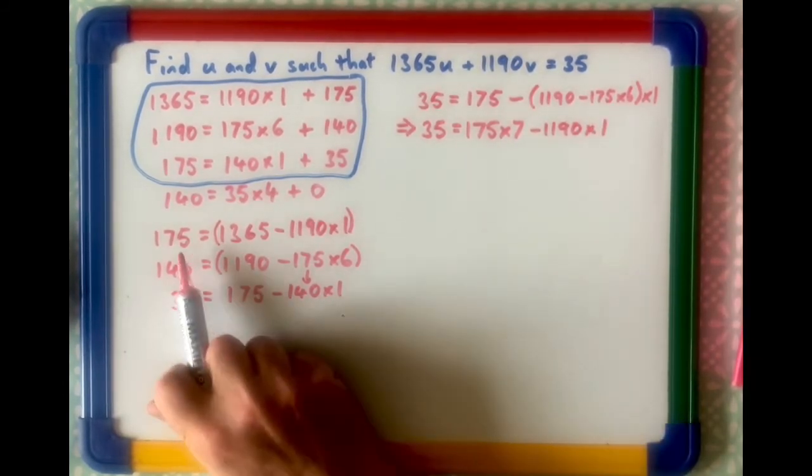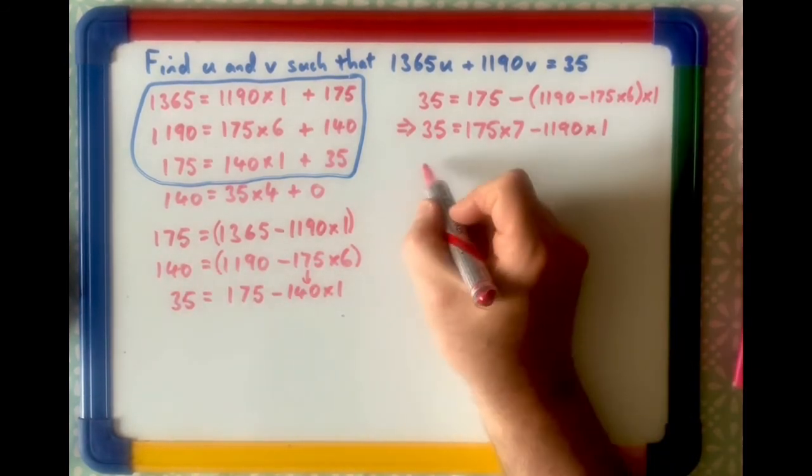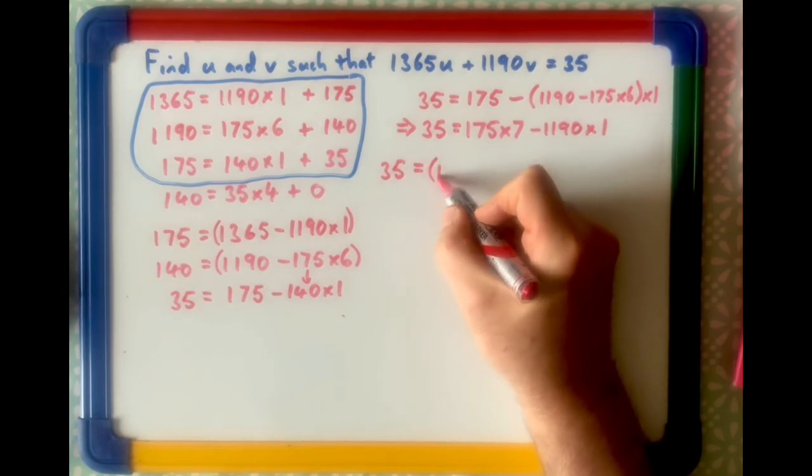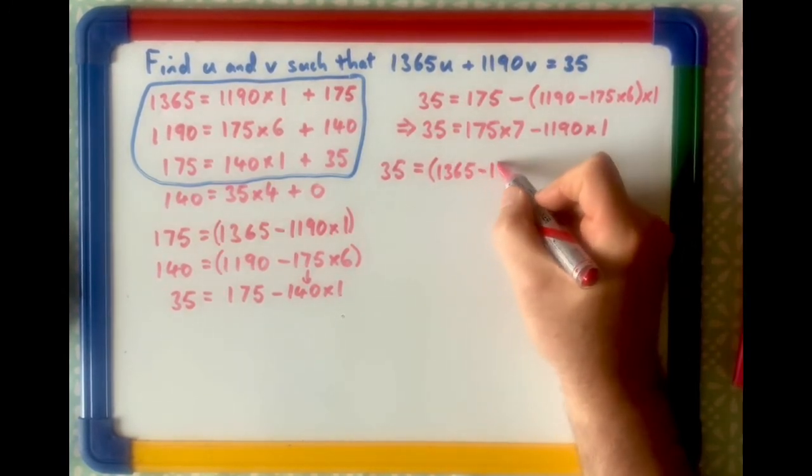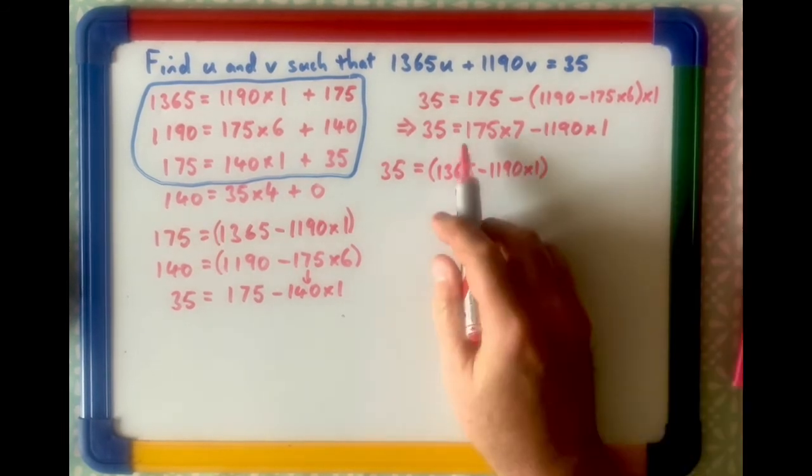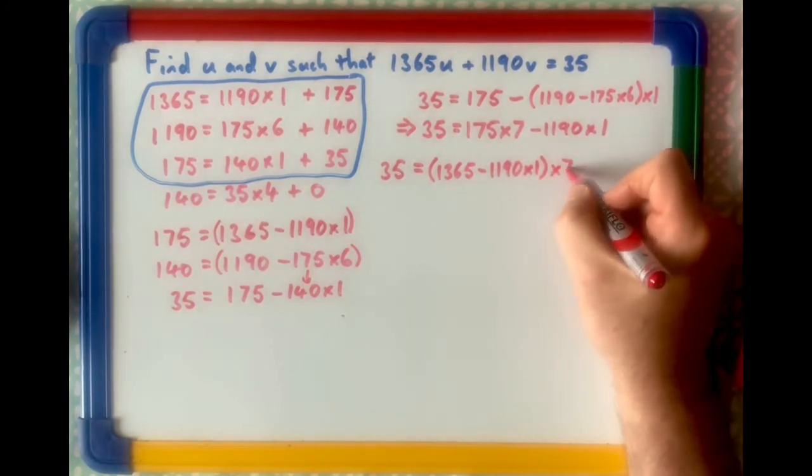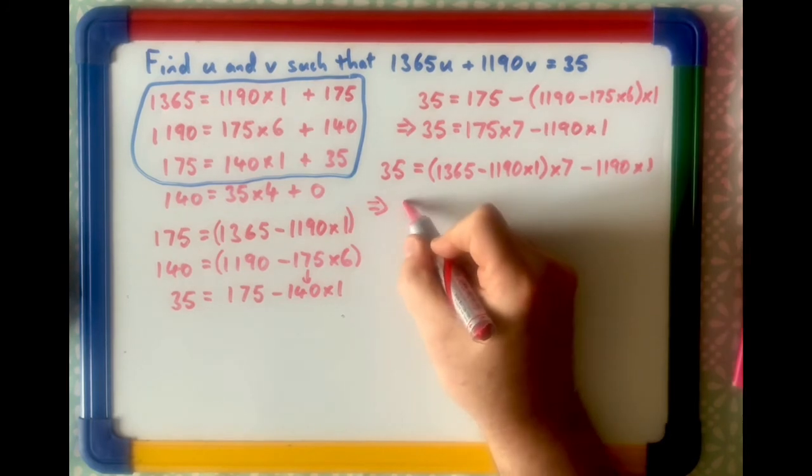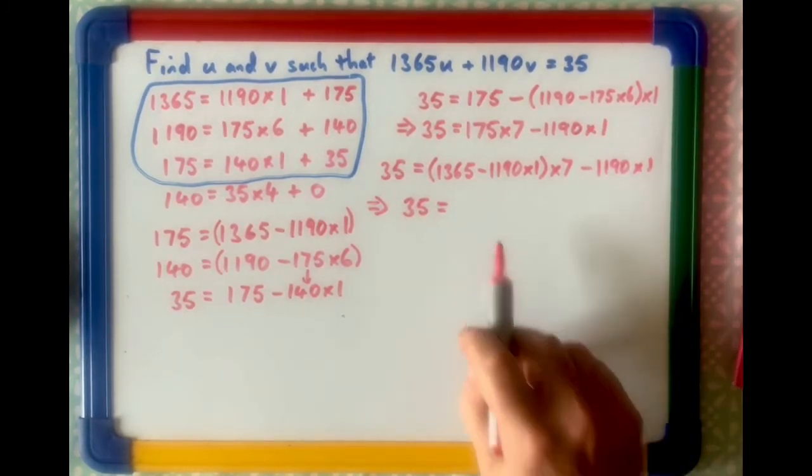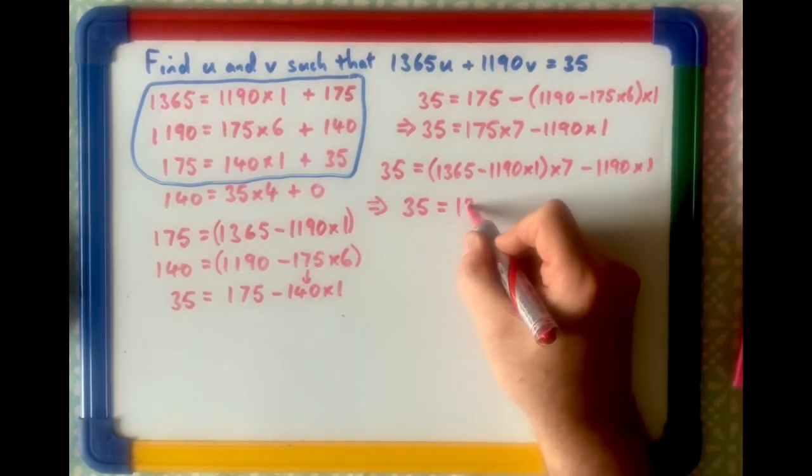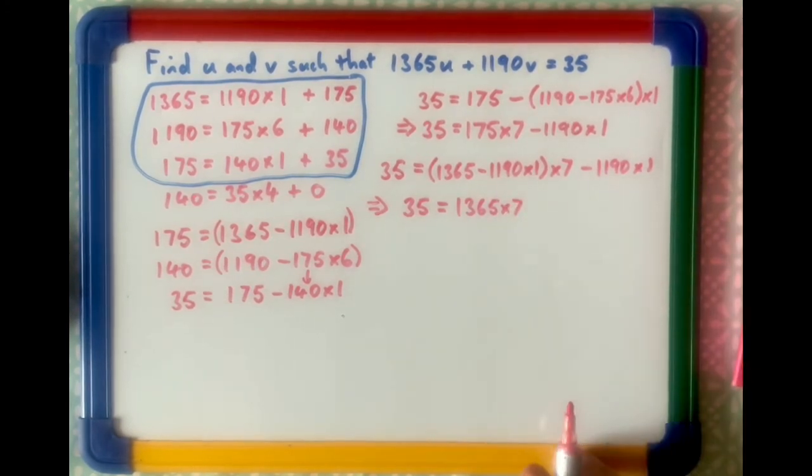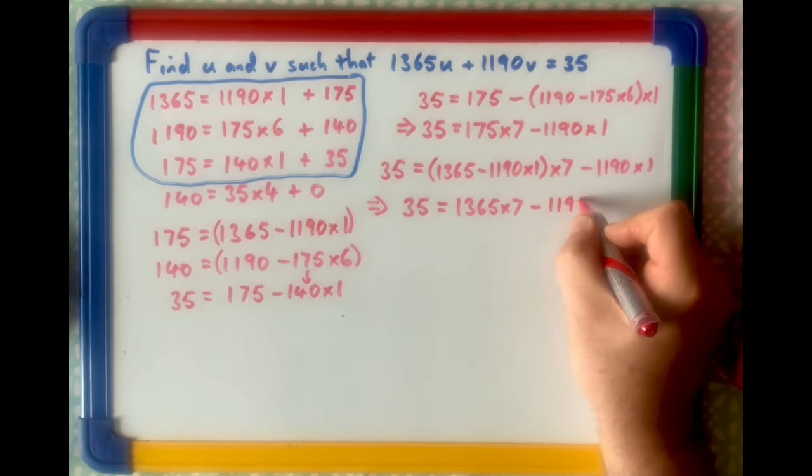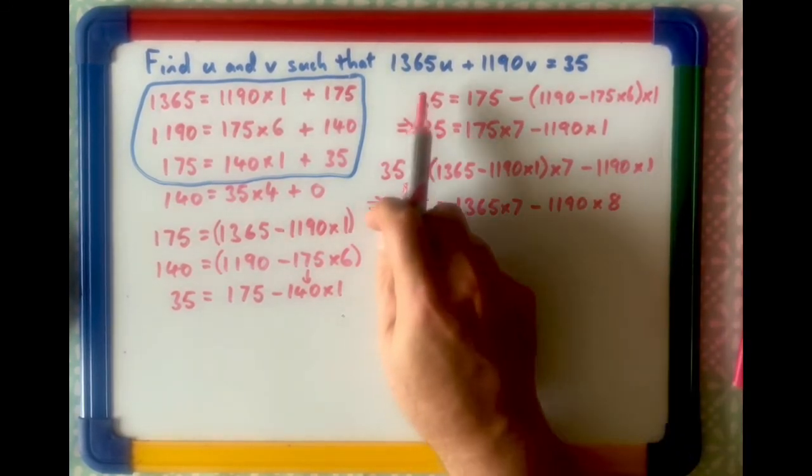Now, for the next line, I'm getting rid of 175, so we've got 35 equals, now instead of 175, I'm writing down this, which is 1365 minus 1190 times 1, that's instead of 175, remember, it's times 7, minus 1190 times 1. Now, tidying that up, we have 35 equals 1365 times 7. That's the first bit, now this is minus 7 times 1190, minus another one, so it's minus 1190 times 8.